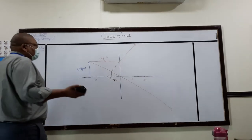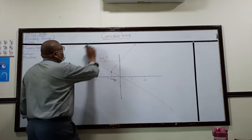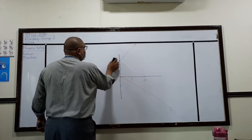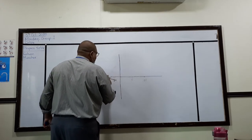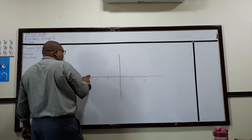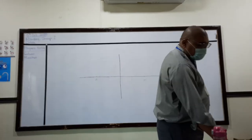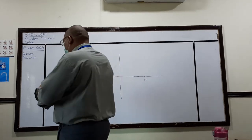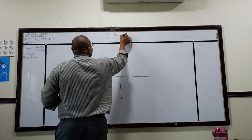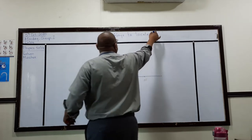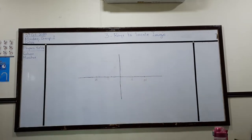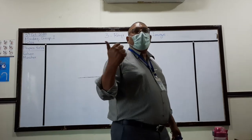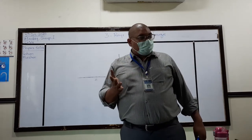There is one last thing I would like to tell you — about using three rays. This is a famous question which comes again and again in the paper. They ask you to use three rays to locate the image. We normally use two rays only, but now we need to learn a third ray also. It is very simple.